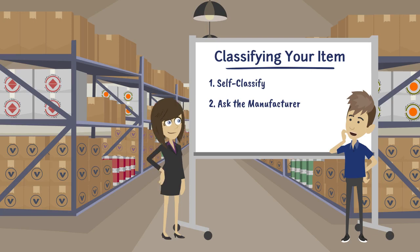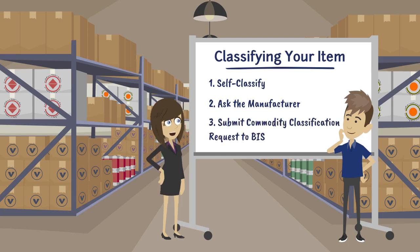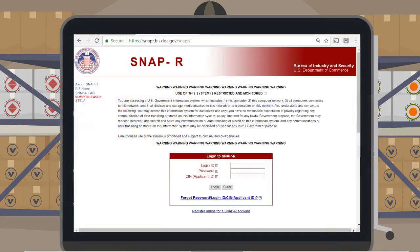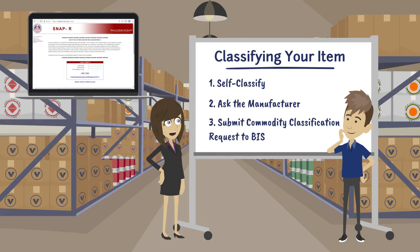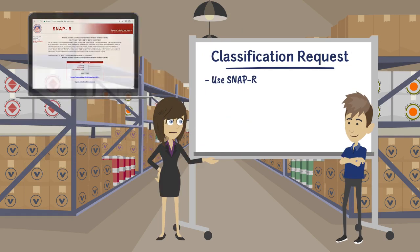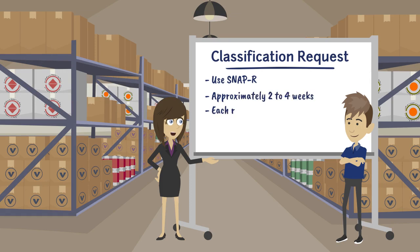What if I'm going nowhere with self-classifying or the manufacturer has no idea? You can always submit an online request to the Bureau of Industry and Security to classify the item for you. To do this, you will need a SNAP-R account — the same system used for submitting license applications. The commodity classification process takes, on average, two to four weeks. You can include up to six line items per request, and there is no fee for a classification request.